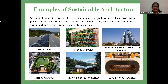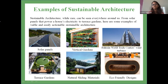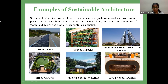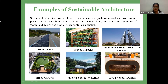Sustainable architecture is not a futuristic or far-away dream — it can be seen everywhere around us. It's where the turmoil of urbanization meets the serenity of nature. Examples of sustainable architecture include solar panels that absorb the sun's energy, vertical gardens where plants grow on vertical panels, wind turbines — an excellent example being Bahrain's World Trade Center — as well as terrace gardens, natural building materials, and eco-friendly designs.